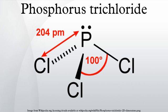PCl3 reacts rapidly and exothermically with water to form phosphorous acid, H3PO3, and HCl: PCl3 + 3H2O → H3PO3 + 3HCl.